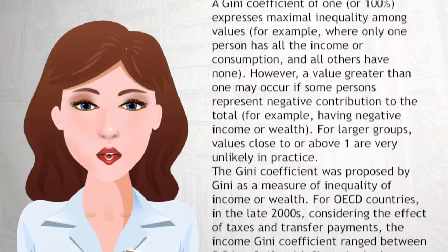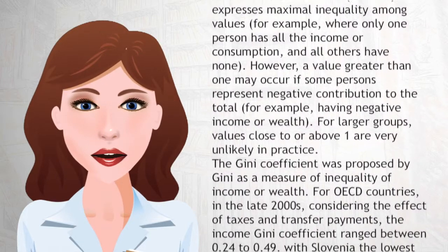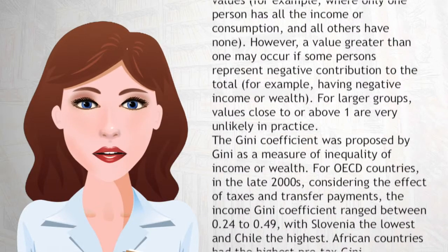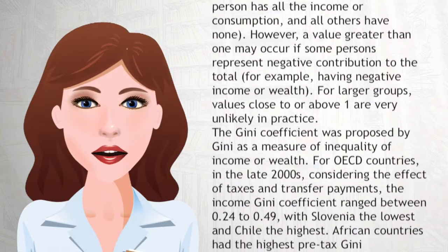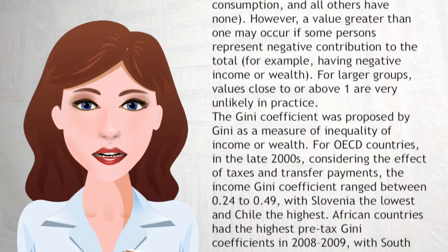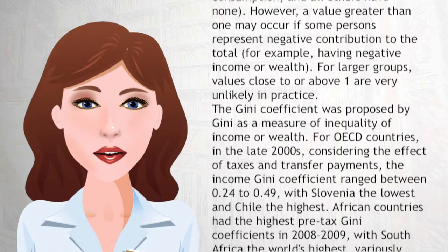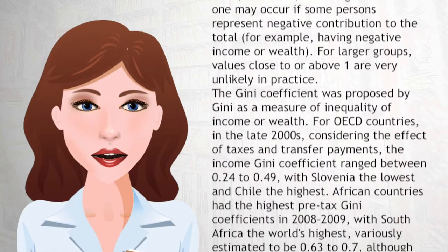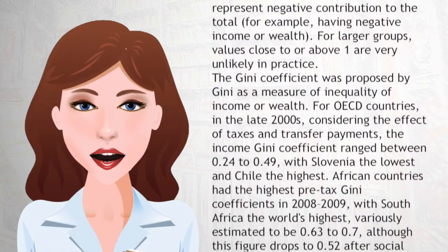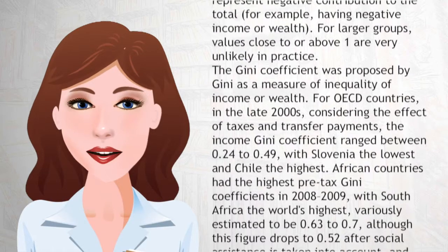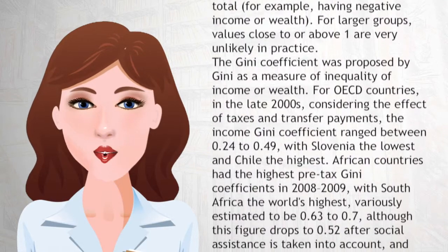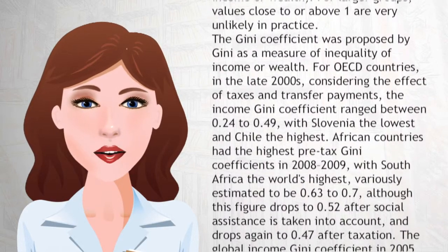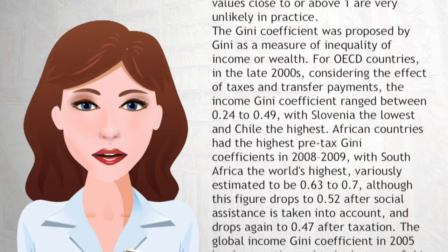The Gini coefficient was proposed by Gini as a measure of inequality of income or wealth. For OECD countries in the late 2000s, considering the effect of taxes and transfer payments, the income Gini coefficient ranged between 0.24 and 0.49, with Slovenia the lowest and Chile the highest.